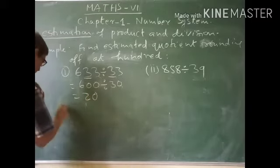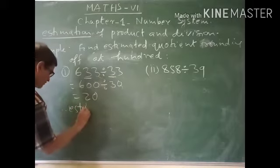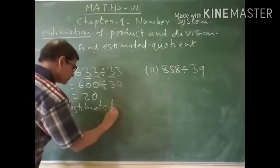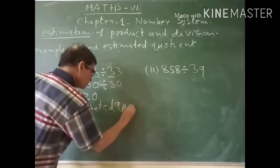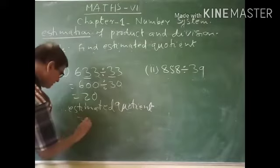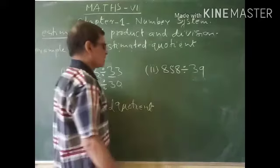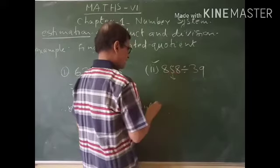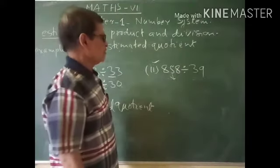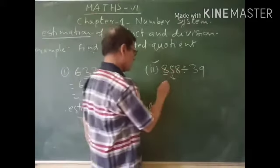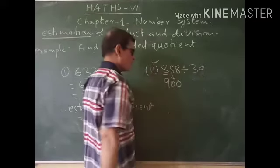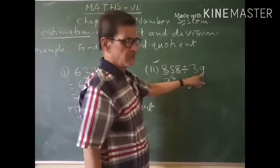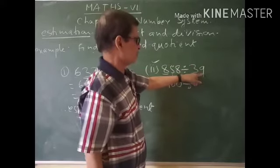That's the estimated quotient, 20. Now come to this example. Rounded at the tens place, there is 5, so one should be added to 8 and this will become 900. And at the ones place there is 9.